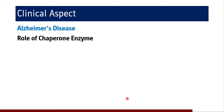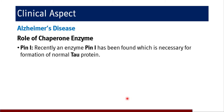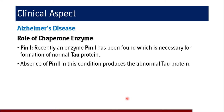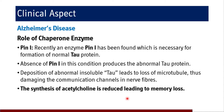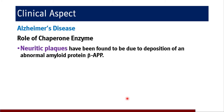The role of the chaperone enzyme in Alzheimer's disease: PIN1 is a recently identified enzyme necessary for the formation of normal tau protein. Absence of PIN1 in this condition produces abnormal tau protein. Deposition of this abnormal insoluble tau leads to loss of microtubules, damaging the communication channels in nerve fibers, and the synthesis of acetylcholine is reduced, leading to memory loss. This is the role of the chaperone enzyme PIN1 in the synthesis of normal tau protein.